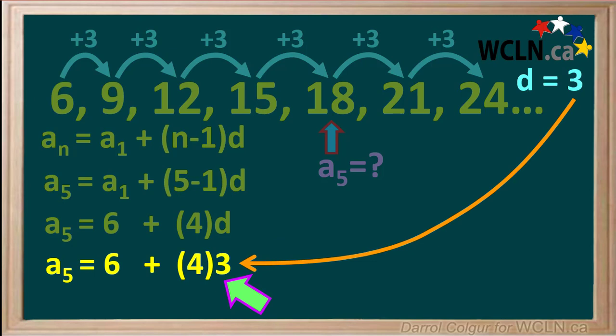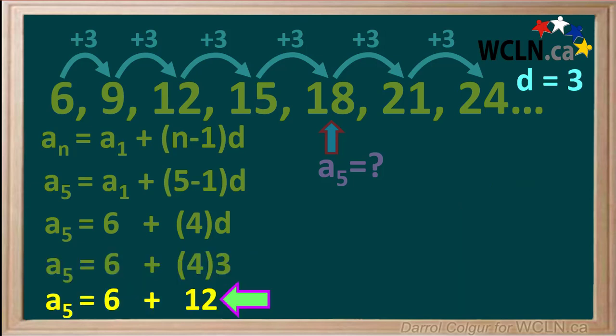The common difference d is equal to 3, so now we have a5 equals 6 plus 4 times 3. 4 times 3 is 12, so now we have a5 equals 6 plus 12, which equals 18.